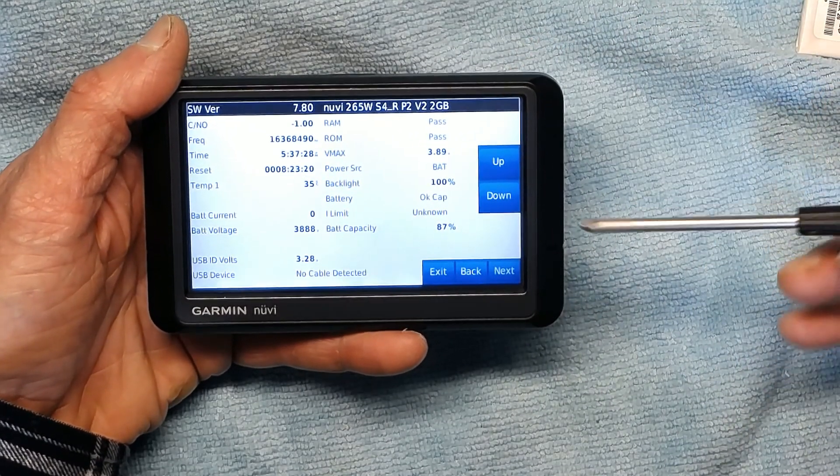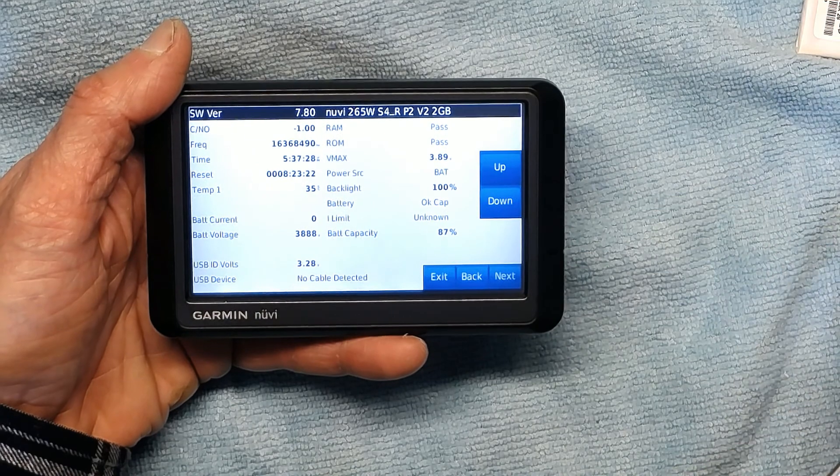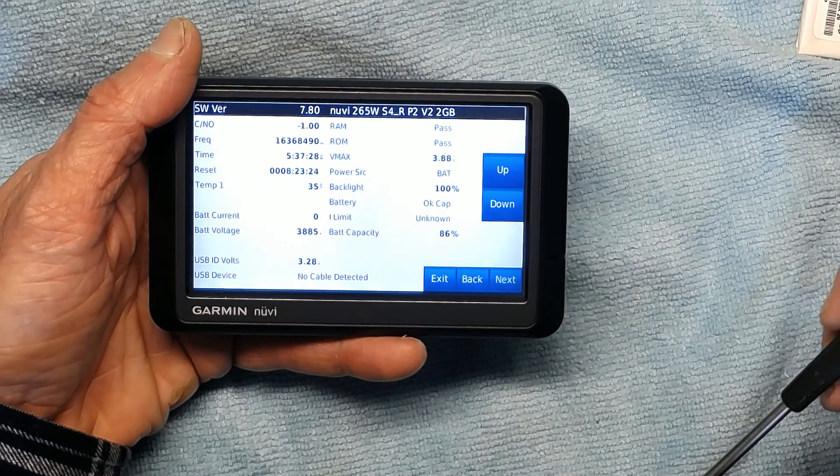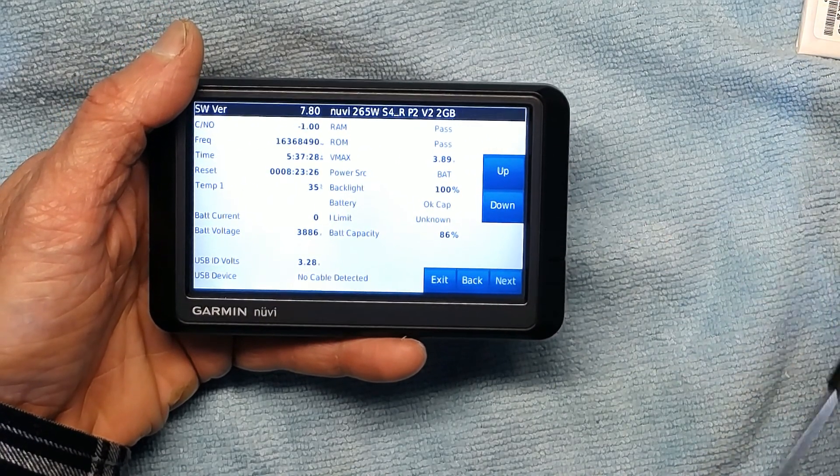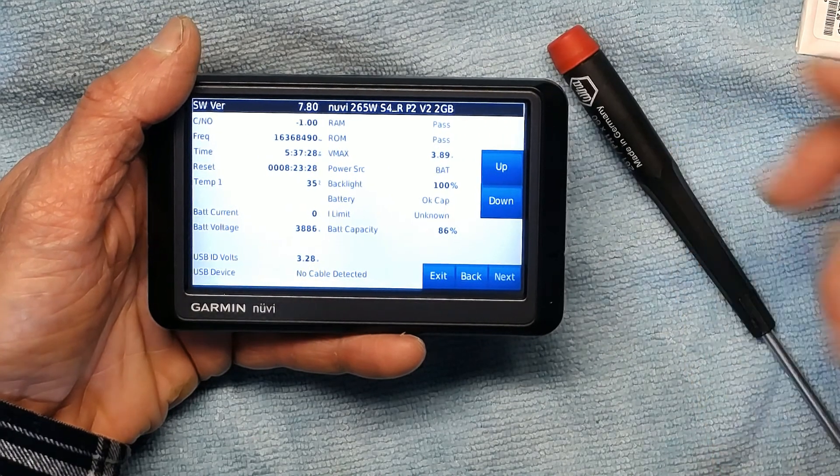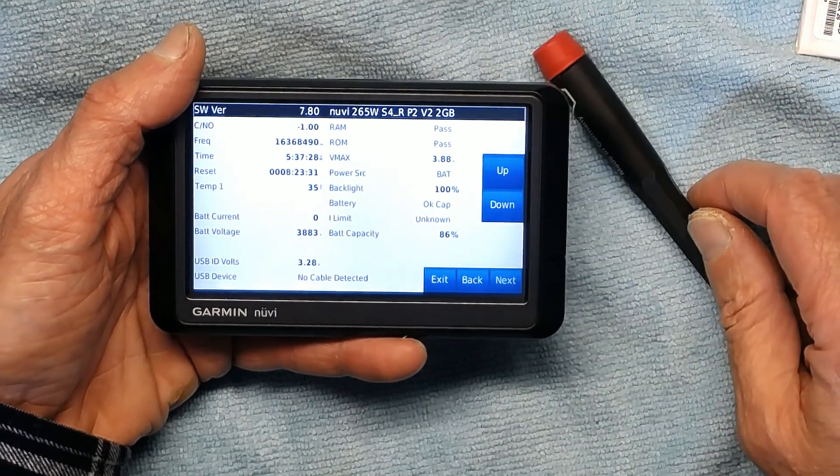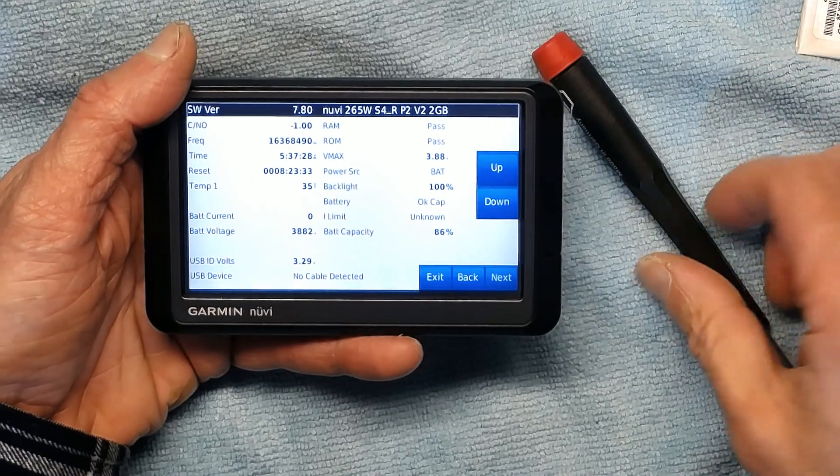Basically you need to know how long does it take for it to drop one percent. A good battery should drop one percent every 30 seconds, and a defective battery will drop every two to three seconds.